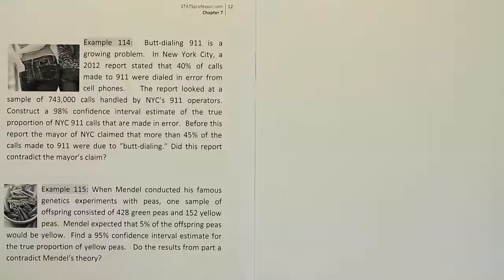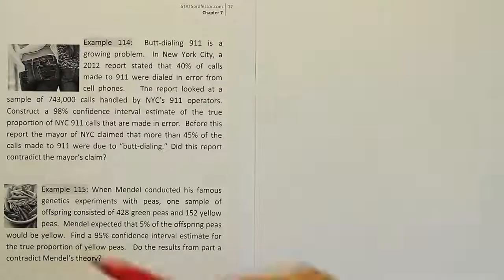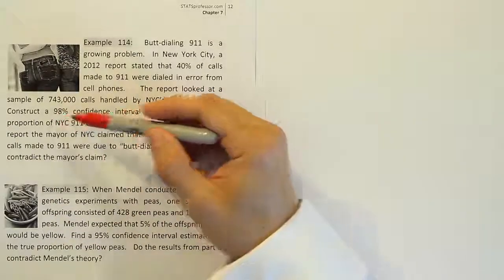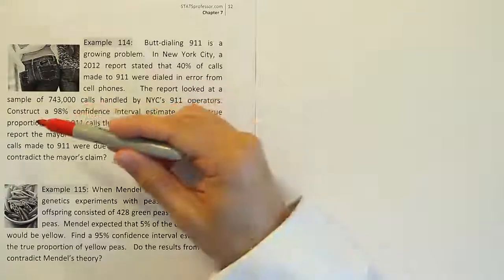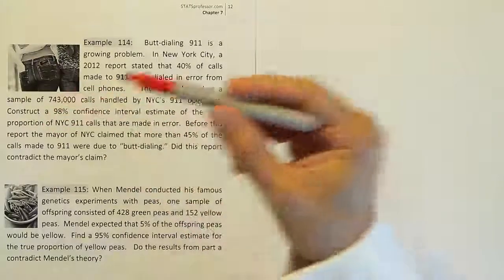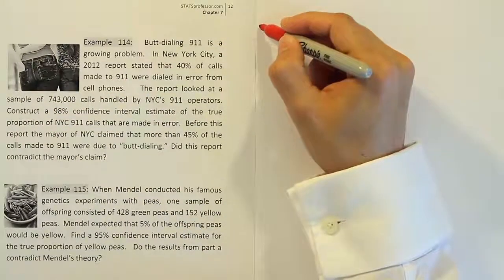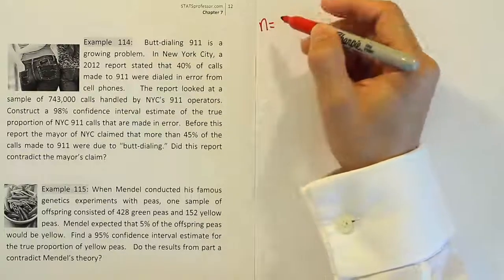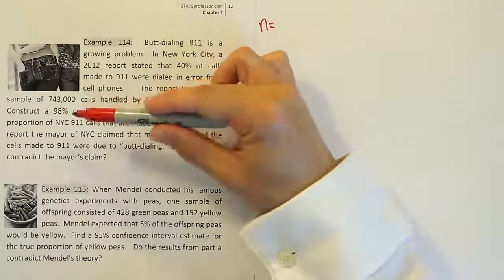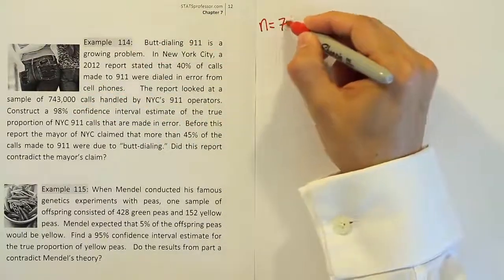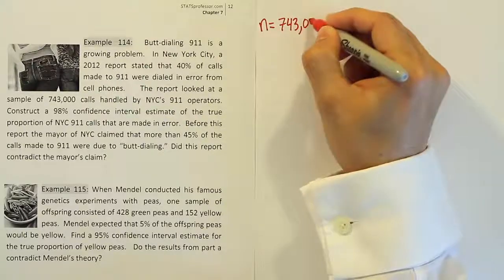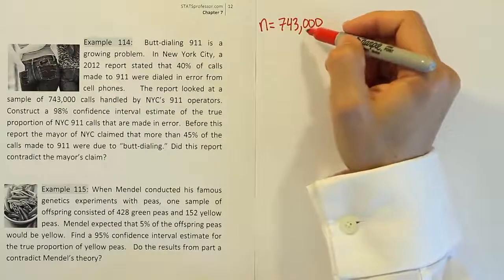Okay, so let's take a look at that problem by looking first at what they're asking us to do. It's clear they say construct a confidence interval, a 98% confidence interval, to estimate the true proportion. So it's a proportion confidence interval. Let's copy down the things we usually need for those intervals. We need a sample size n. It says they looked at a sample of 743,000 calls. It's a huge sample size.